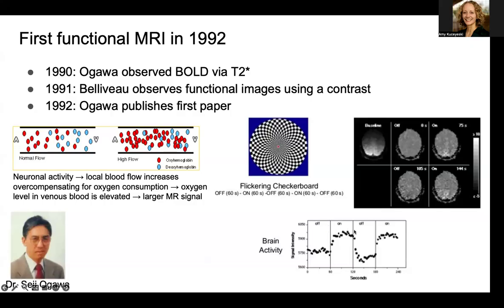Here's a section of off, on, off, on. And you can see how the BOLD signal or brain activity is lower in the off state and higher in the on state. So this was the first functional MRI imaging performed to see how brain activity changed when stimuli was altered over time.